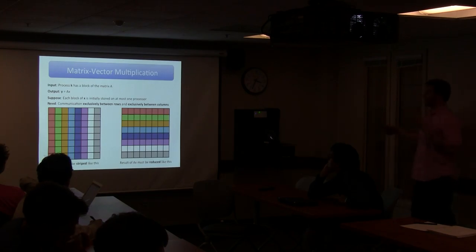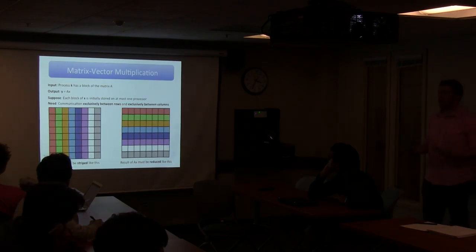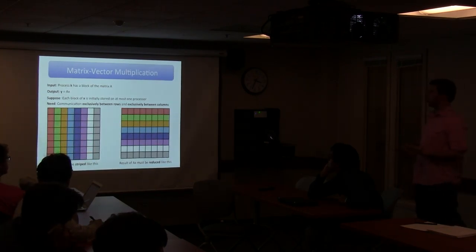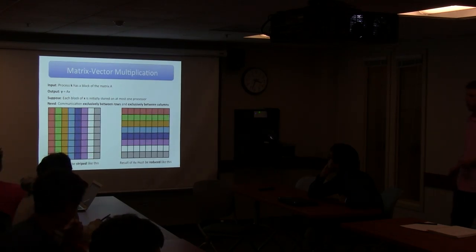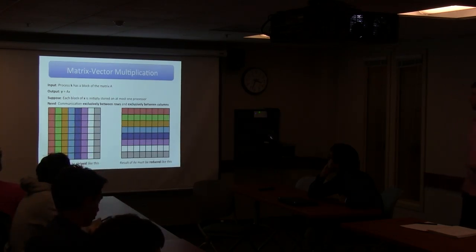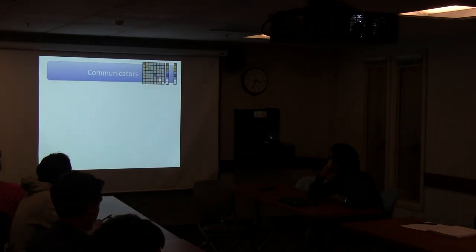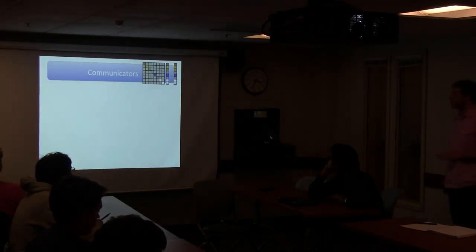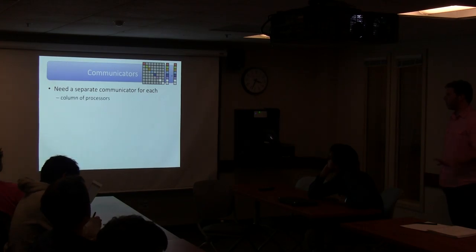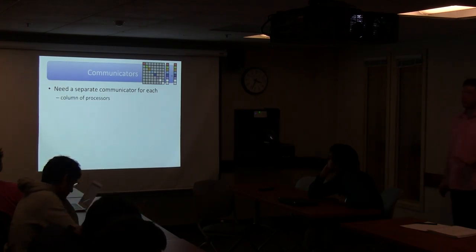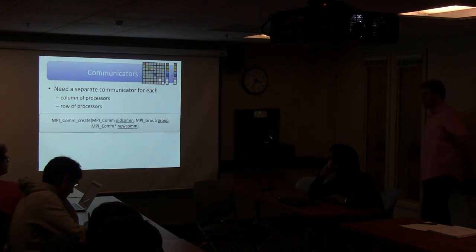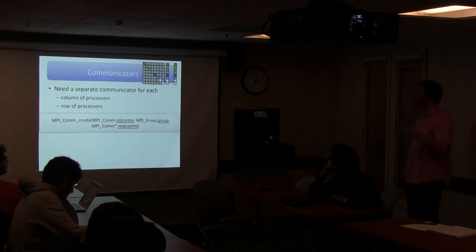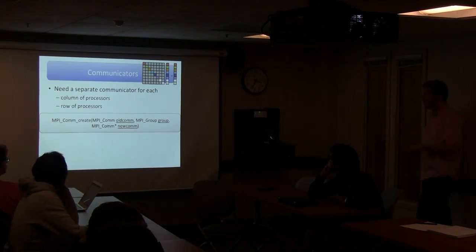This tells us we need a way of having little communicators - one for rows and one for columns. We need a separate communicator for each column of processors and row of processors. There's a command for this - given an old communicator and an MPI group, you can get a new communicator.